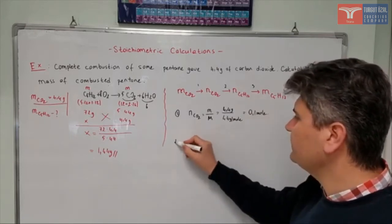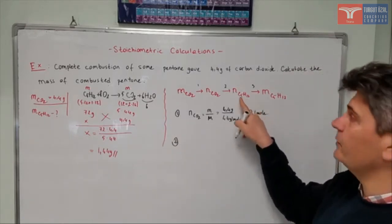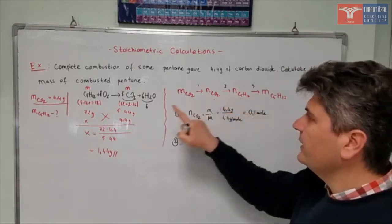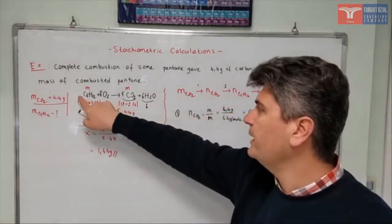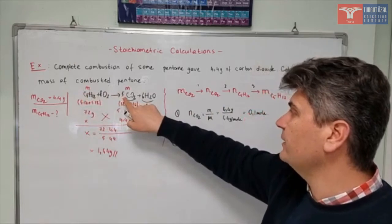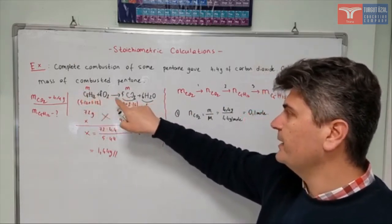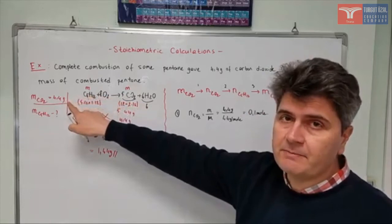Then the second step will be to find the mole number of pentane from the mole number of carbon dioxide. As you see, the relationship between pentane's mole number and carbon dioxide's mole number is 1 to 5. So pentane's mole number is 5 times less.